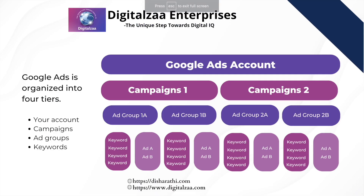Now let's check the Google Ads structure. This is the interface inside Google Ads — you can see it inside the Google AdWords platform, not on Google directly. Google Ads is organized into four levels: your account, campaigns, ad groups, and keywords — just four things to remember. Your Google Ads account has your company name, and in the tree structure below it come campaigns — campaign one, two, three, four, five — however many you have.